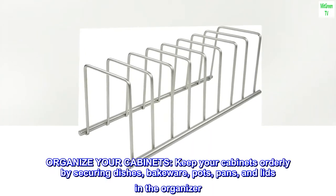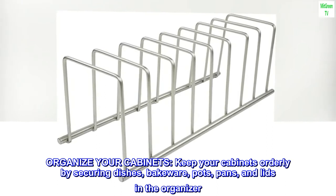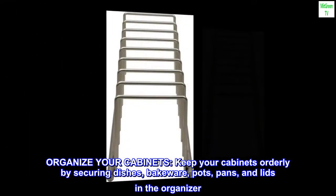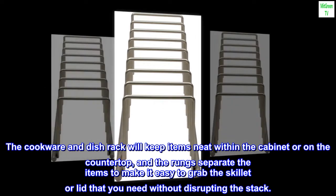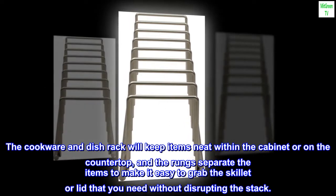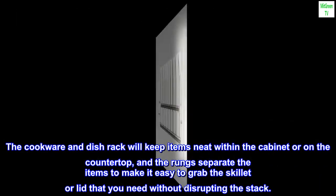Organize your cabinets. Keep your cabinets orderly by securing dishes, bakeware, pots, pans, and lids in the organizer. The cookware and dish rack will keep items neat within the cabinet or on the countertop, and the rungs separate the items to make it easy to grab the skillet or lid that you need without disrupting the stack.